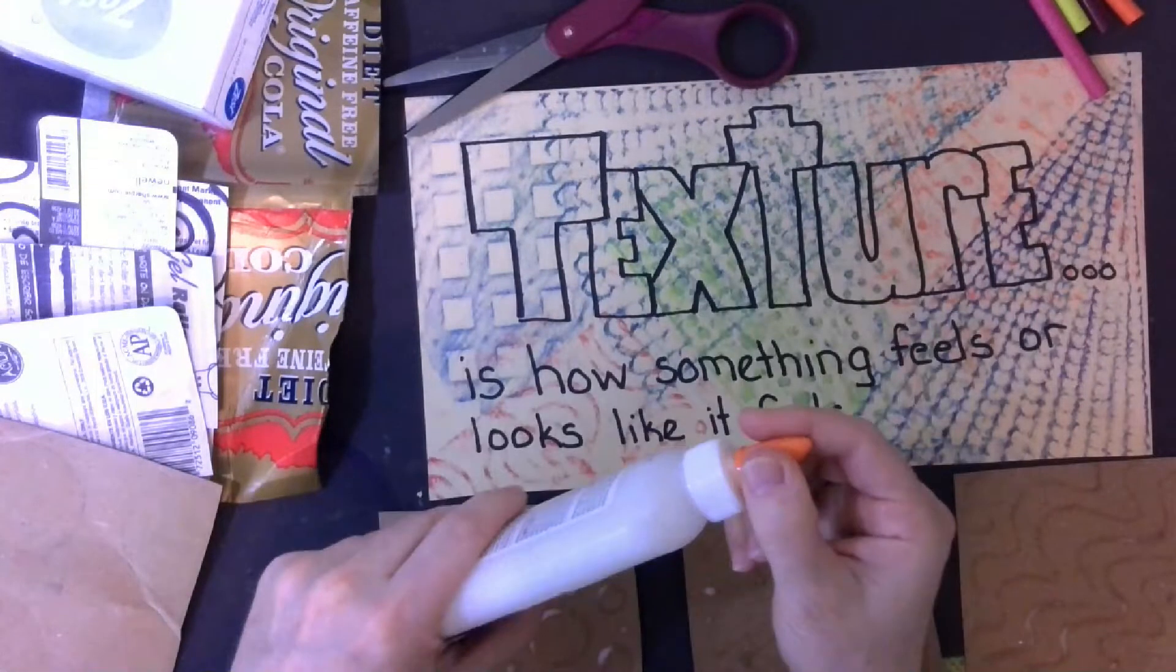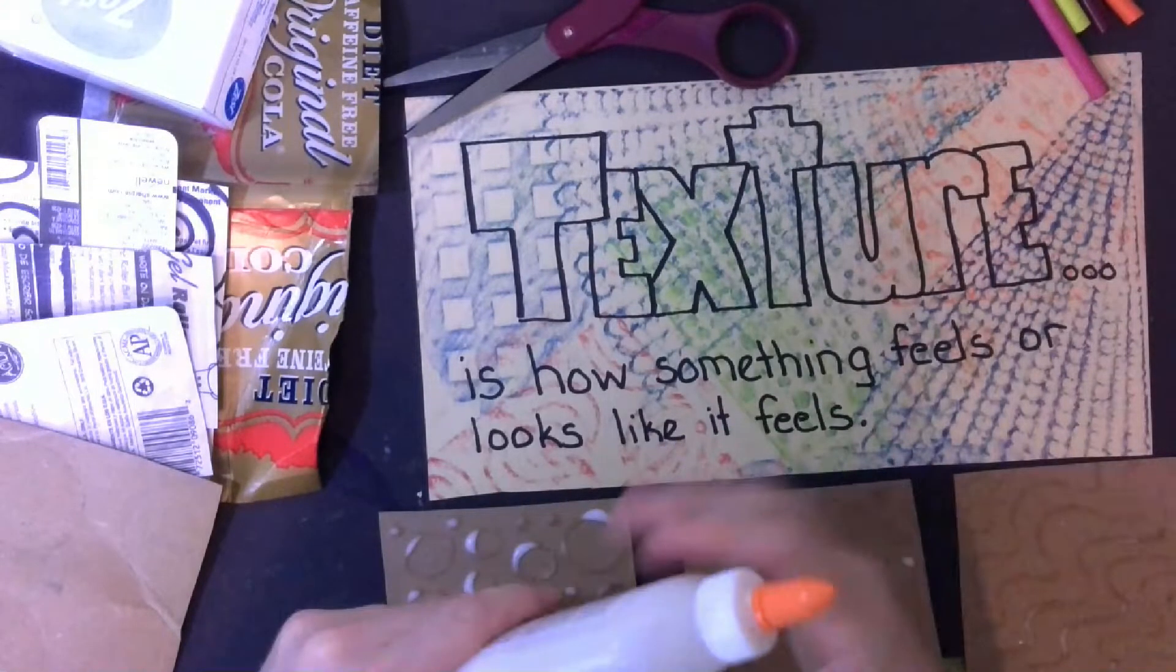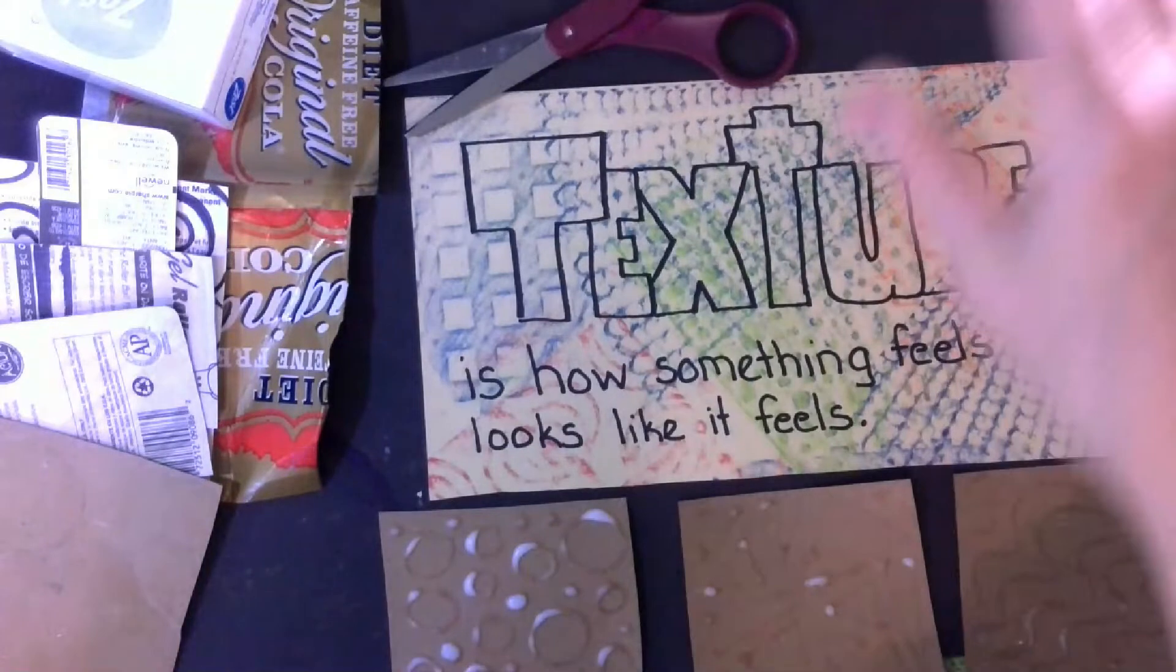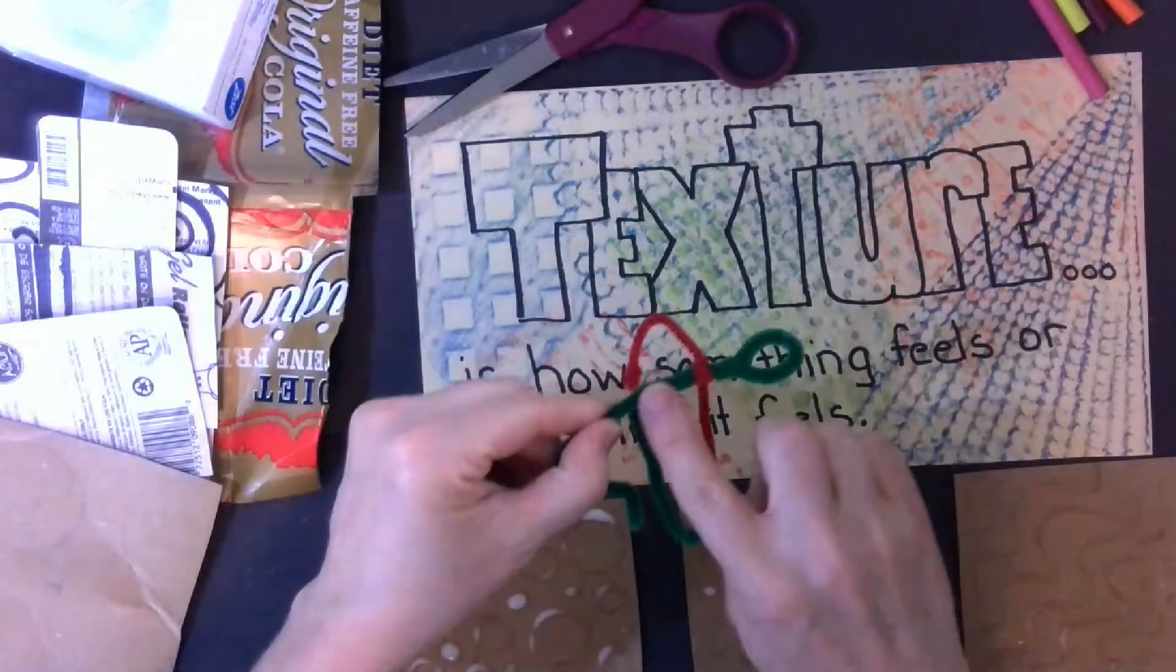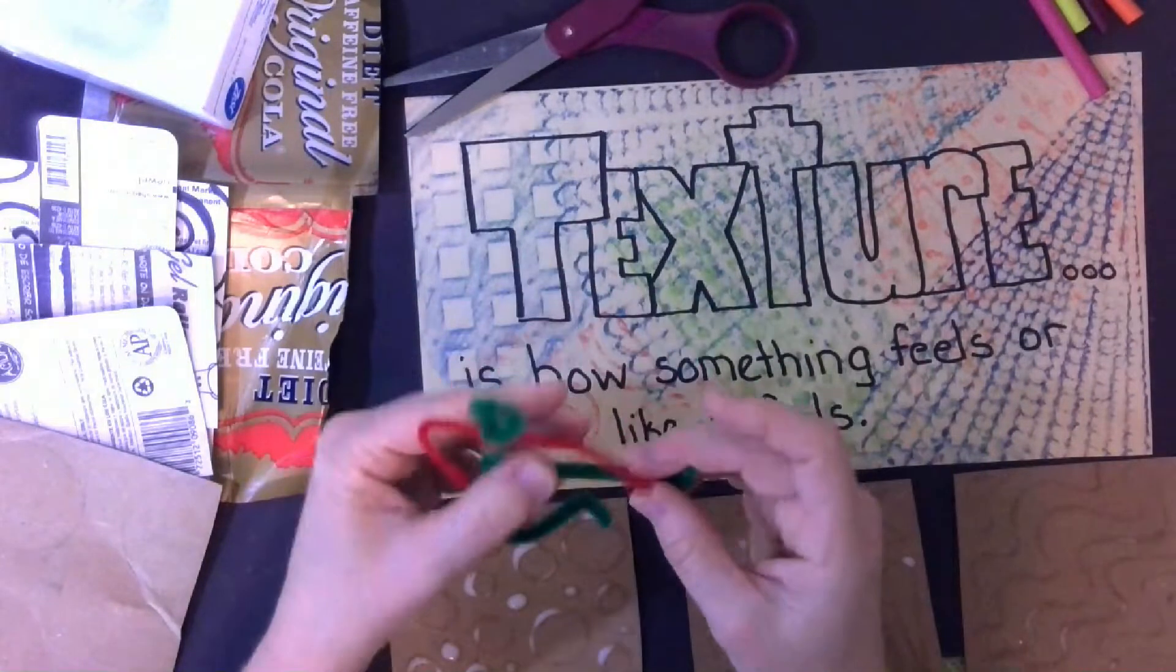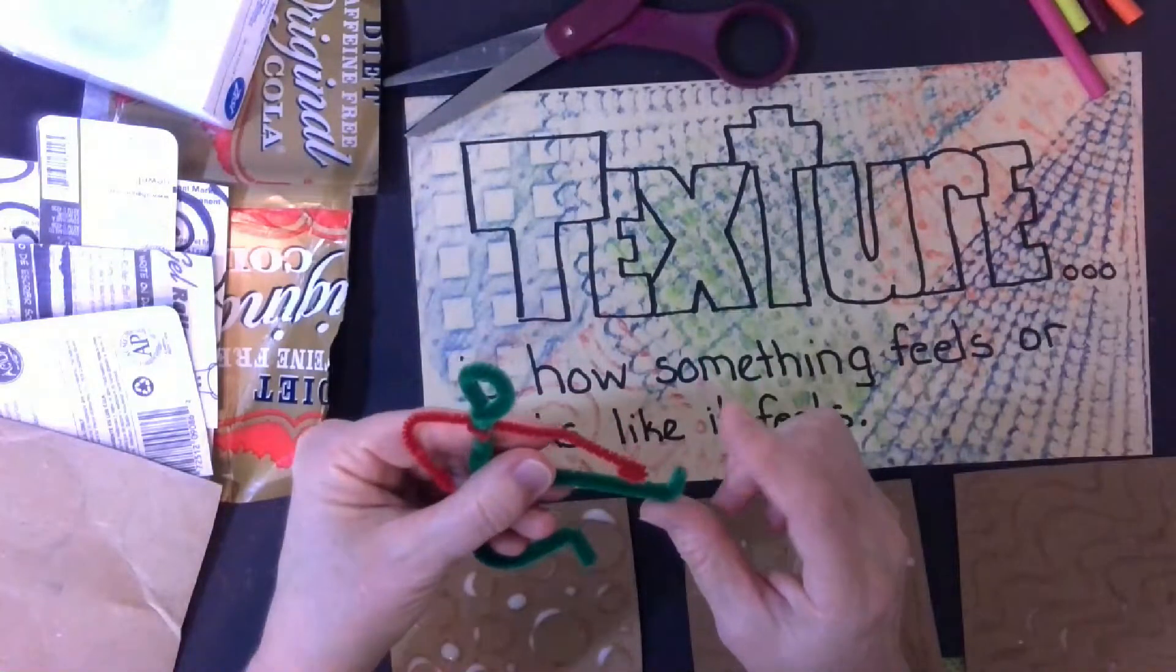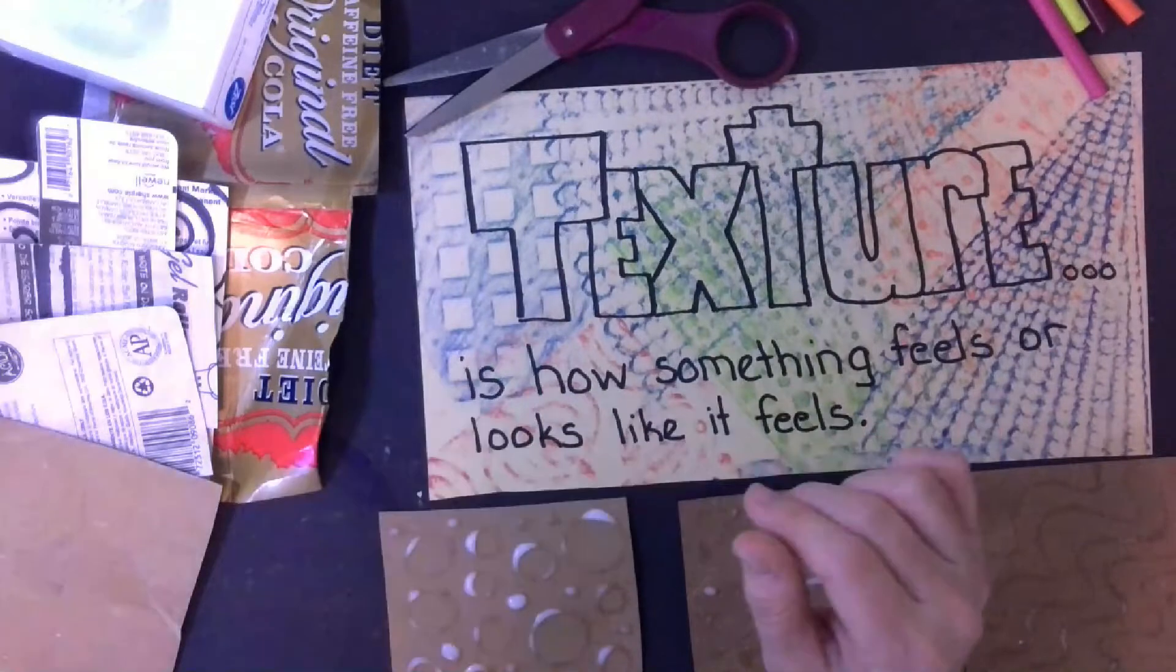It could be smooth. It could be kind of bumpy. It could be soft. These are kind of soft. Except on the end, ow, it could be sharp or pokey. How something feels.